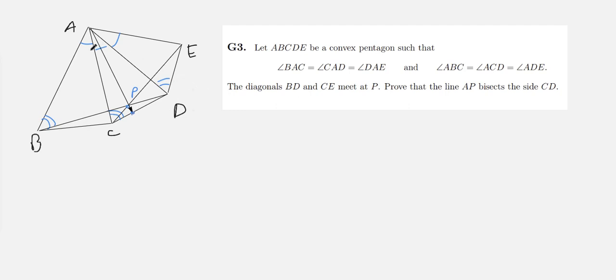So, first off, a good thing to note is that the angle conditions give that each triangle ABC, ACD, and ADE, all three triangles are similar to each other. And so we can create a system of ratios using the lengths of these similar triangles.